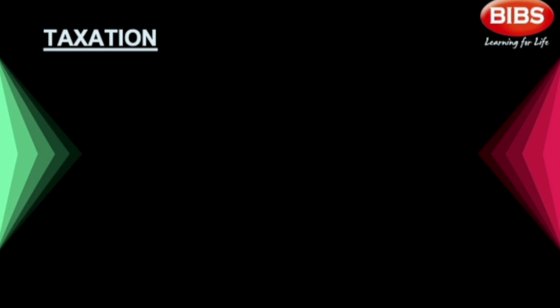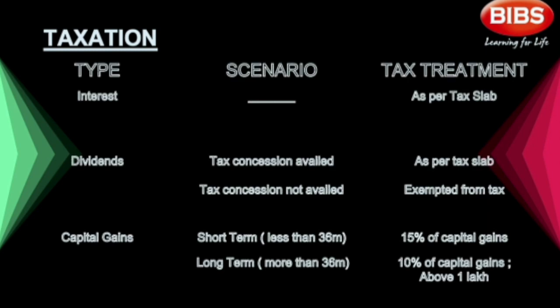Never make an investment decision without understanding the tax implications. Three types of return can be expected from an InvIT fund: interest income, dividend income, and appreciation on invested capital or capital gains. Any dividend or interest income that you get from an InvIT is completely taxable as per your income tax slab. This income has to be declared every year in your tax return under the header 'income from other sources'. So if you are in the higher tax bracket, you might have to pay 30% tax on any dividend or interest received from an InvIT.